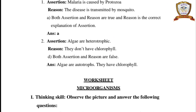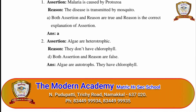Question 2. Assertion: algae are heterotrophic. Reason: they do not have chlorophyll. Both are false — algae are autotrophic and they have chlorophyll, which is why they are green in color. Answer: D — both assertion and reason are false.